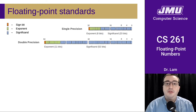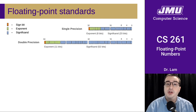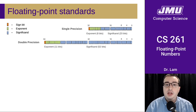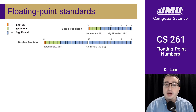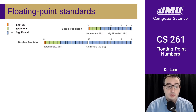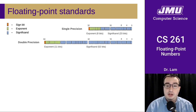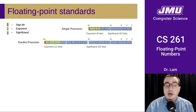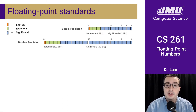You're probably most familiar with single precision and double precision floating point numbers, because these are the float and double data types in Java and C. Single precision gives you 8 bits for the exponent and 23 bits for the significand. Double precision gives you 11 bits for the exponent and 52 bits for the significand.